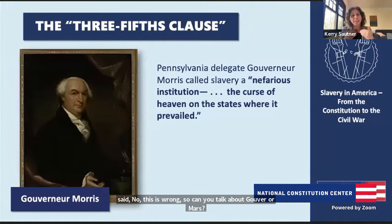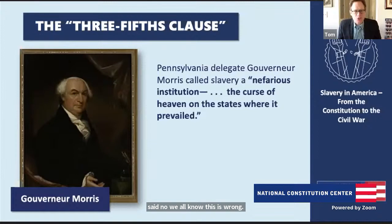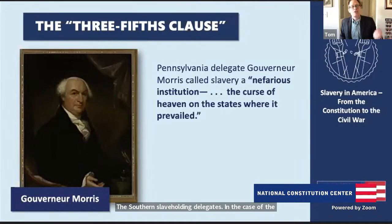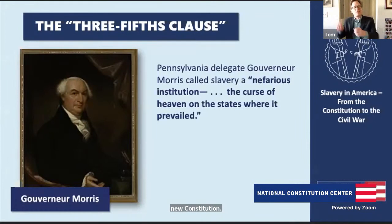Gouverneur Morris is an important delegate from Pennsylvania and an ally of Benjamin Franklin. In many ways, he was the most ardently anti-slavery voice at the convention. During debates over the Three-Fifths Compromise and the international slave trade, he called the Southern slaveholding delegates hypocrites, and called slavery 'an atrocious institution, the curse of heaven on the states where it prevailed.' Many of the strongest anti-slavery arguments at the convention came from Morris. He had a vision of a powerful national government and is also known as the penman of the Constitution because he helped create the final draft in the Committee of Style — but he was also a key anti-slavery voice.